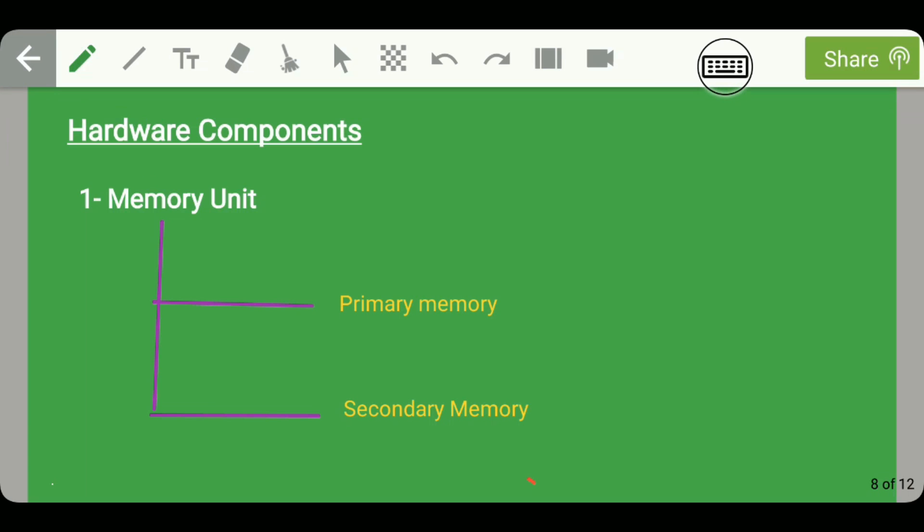Moving further, let us discuss the hardware components present in a computer system. There are two hardware components: the first one is memory unit and the second one is central processing unit, that is CPU. Let us discuss memory unit. Memory unit is placed in a system for storing data. The memory unit is further classified into two categories: primary memory and secondary memory.